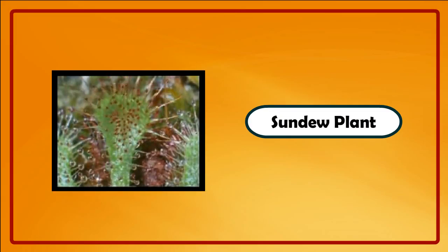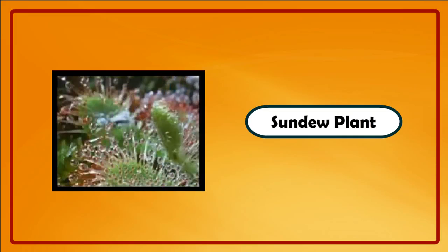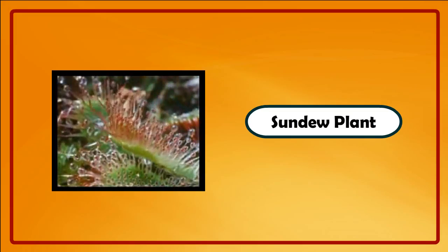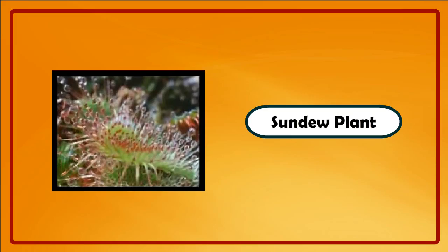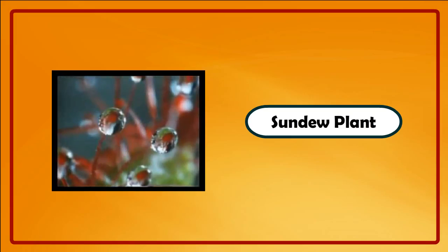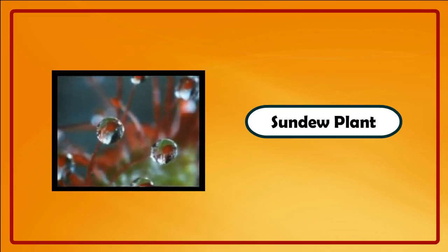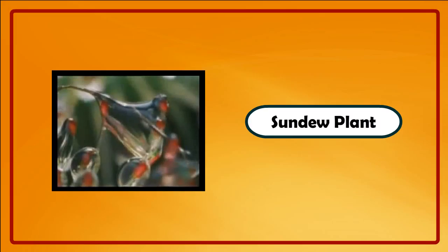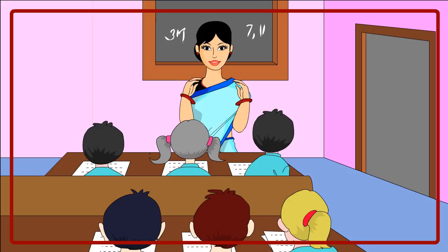The leaves of a sundew plant are covered with thin hair which have a sticky liquid on them. The drops shine when sunlight falls on them, attracting insects. On touching a drop, the insects get stuck to it and the hairs tighten their grip. The insect gets suffocated and gets digested by the digestive juices of the plant.